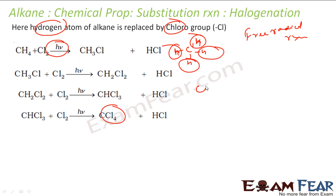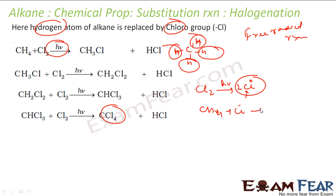In the chain initiation step, the chlorine molecule in the presence of sunlight becomes a chlorine free radical. Then in the chain propagation step, CH₄ reacts with this chlorine free radical to give a CH₃ free radical and HCl. This keeps happening. In the chain termination (ending) step, the CH₃ free radical reacts with a chlorine free radical to give CH₃Cl.